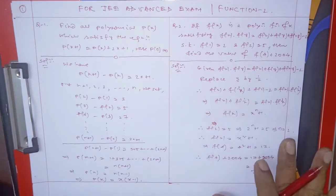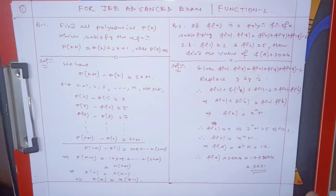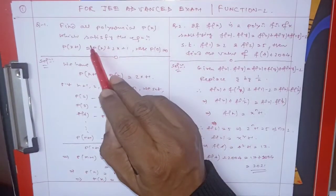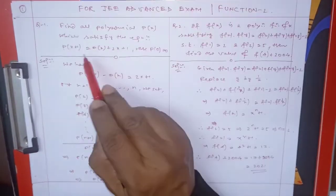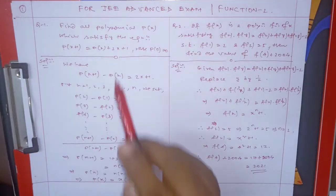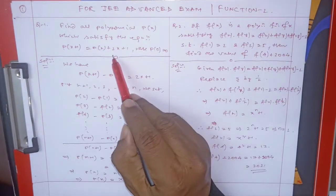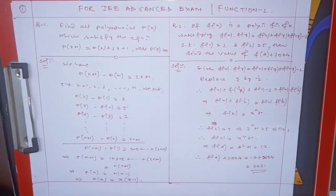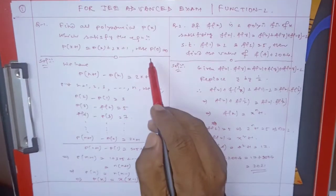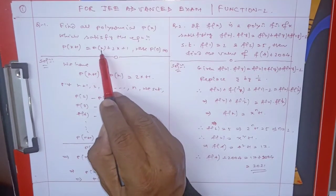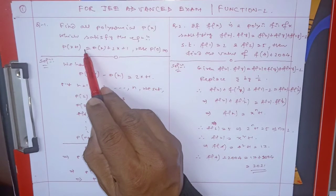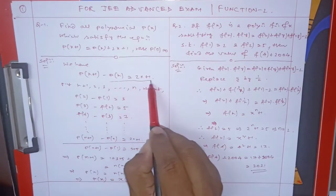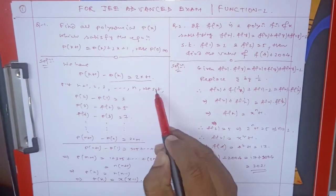Today's question: Find all polynomials p(x) satisfying p(x+1) = p(x) + 2x + 1, where p(0) = 0. When we have this type of equation, we transfer p(x) to the left side. Now we put x = 1 as the input value.